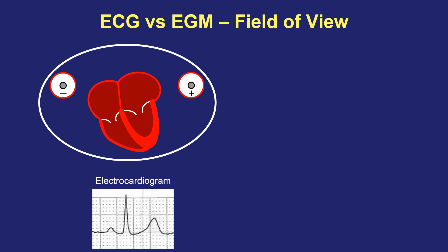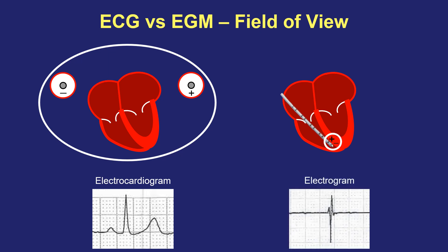However, when you place a catheter inside the heart with very closely spaced electrodes so that your anode and cathode are only two or three millimeters apart, the field of view is much, much smaller. So instead of seeing atrial and ventricular activity in their entirety, you're only going to see a little sliver of the local myocardial activation right at the location of where the bipolar is positioned. This recording is known as an electrogram. With the catheter in the right ventricle, you're not going to see any appreciable atrial activity, and you're not even going to see ventricular activity that falls before or after this local recording.